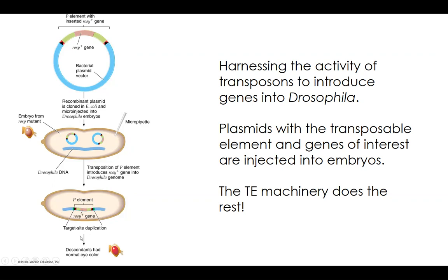One thing we can use transposable elements for is to mutagenize populations. If we want to create mutants like we did with X-rays, we can use transposable elements and try to get them to drop into a set of genes — you'll see these referenced as T-DNA insertions in research papers. Transposons are kind of weird and there's still a lot of mystery surrounding them — one of the biggest questions is how does it know when to jump? We'll be talking a little more about transposons throughout the semester, but for now we understand a bit about their structure, how they were discovered, and some of their uses in modern biology.